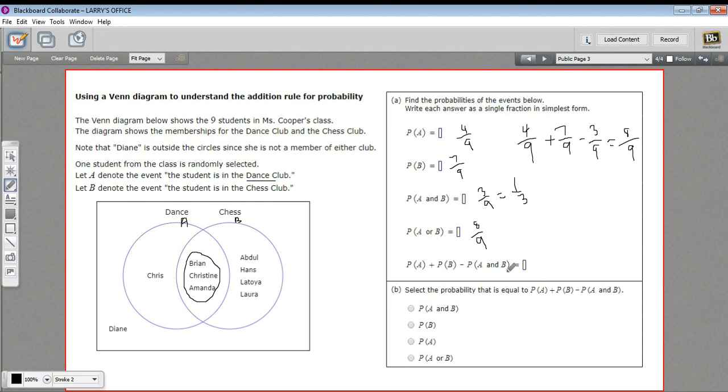So this right here is a formula. I should put the answer here for the probability of A or B. And so that's what we would choose down here. So that's a little bit of work with a Venn diagram and an introduction to the addition rule for probability.